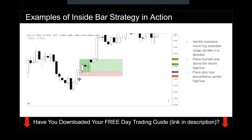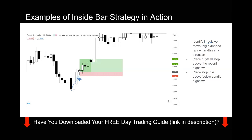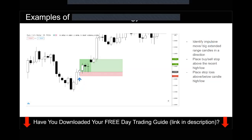Here's the last example. Same process: step one, identify the impulsive move — we have an impulsive move here. This itself is also an extended range candle — a big candle that closes near the top. Then comes an inside bar here. You place a buy stop above and your stop loss below. That's how you do it — very simple. If you have any questions or need clarifications, feel free to comment down below or reach out to my team at support@financialmarketwizards.com.